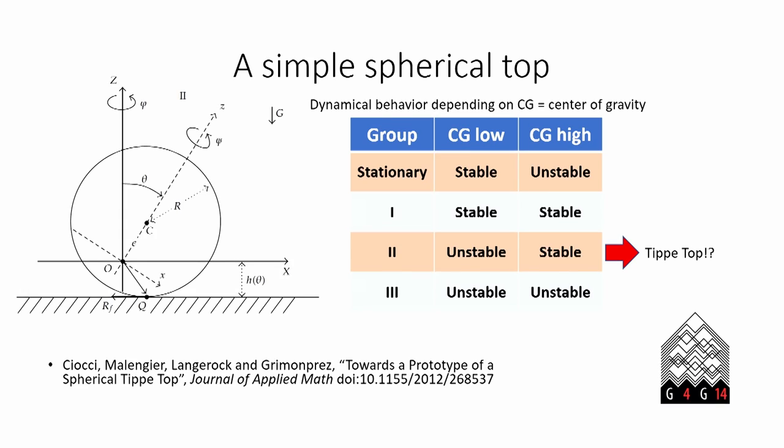But when a sphere is spinning, it can have these other two groups of behavior, and all types of behavior are actually possible. But I draw your attention in particular to Group 2, which is exactly the opposite of a stationary object. It's unstable when its center of gravity is low and stable when its center of gravity is high. This is the domain of the tippy top.